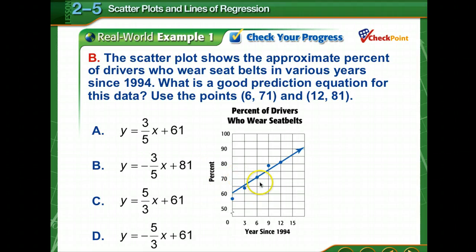Now, the scatter plot shows the approximate percent of drivers who wear seat belts in various years since 1994. What is a good prediction equation for this data? So we're going to use the points 6,71 and 12,81 to write that equation. So remember, you need to find the slope and then substitute into the point slope form. Come back and check your answer.